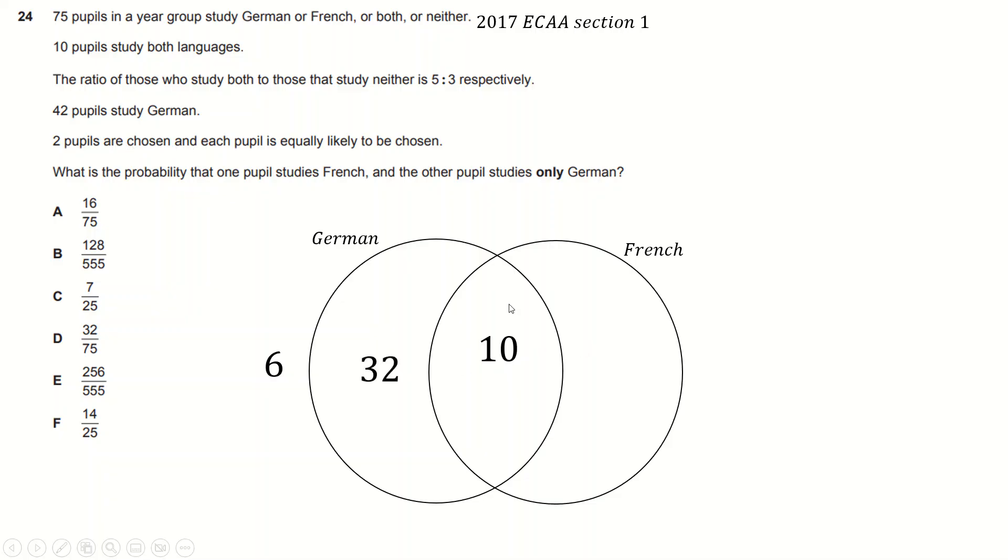Two chosen at random. Okay, so well firstly, the total is 75. So these is added up, take away from 75 is 27. So that must be 27. Two are chosen at random. What's the probability? One studies French, one studies only German. French is 37, so 37 over 75 times only German is 32 over 74.